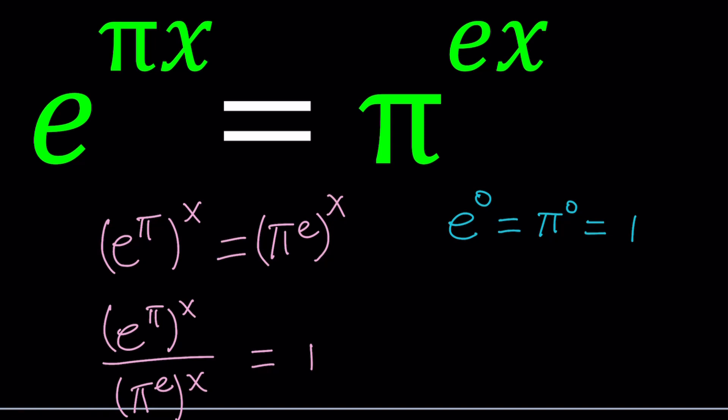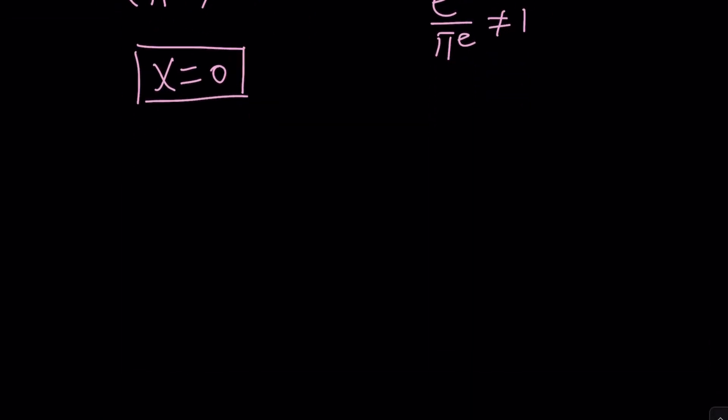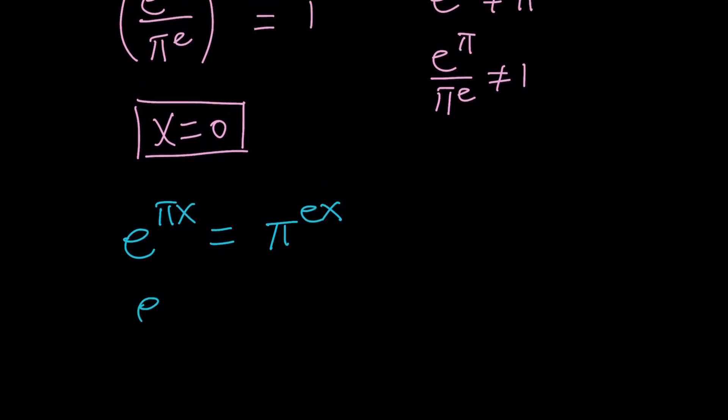But let's dig a little deeper and check for complex solutions. So how do we go about finding complex solutions? Let's rewrite our equation. e to the pi x equals pi to the e x. Now, we're going to do pretty much the same thing. Let's put everything on the same side. And so we're going to get e to the pi over pi to the e to the power x equals 1.